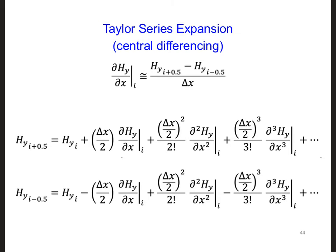Well, the first equation we derived for forward differencing, that's right here using a Taylor series expansion, has an Hy i+0.5 term, and the second equation that we used for backward differencing has an Hy i-0.5 term.